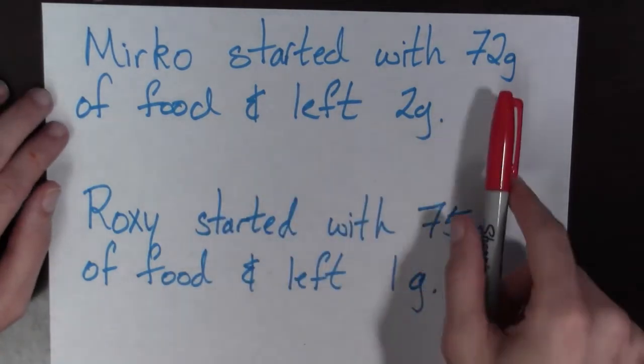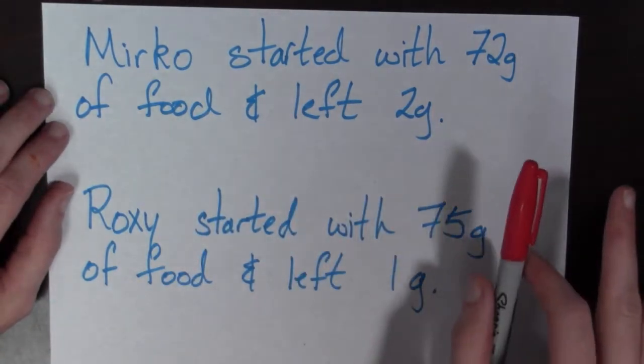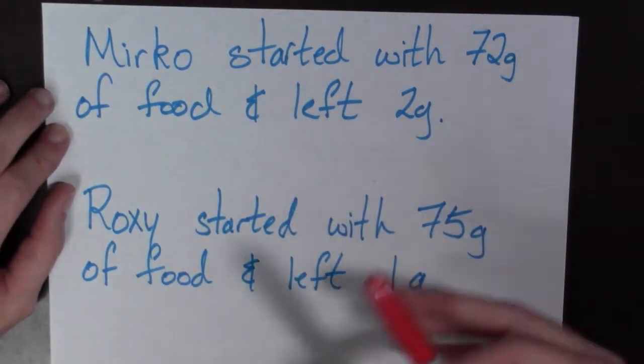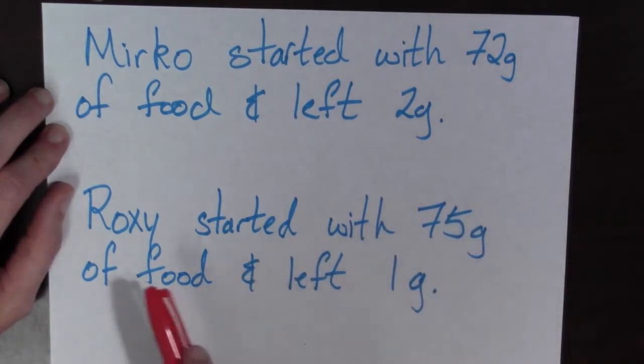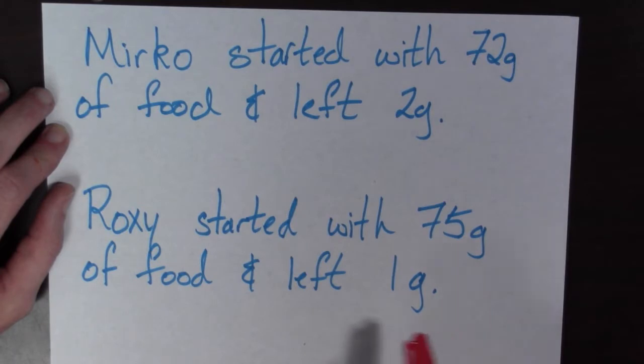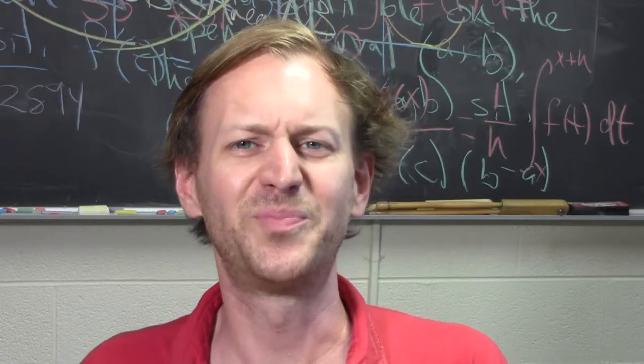On that particular day, Medical started with 72 grams of wet food and when he left there were 2 grams left. On the other hand, Roxy started with 75 grams of wet food and when she walked away there was 1 gram left.